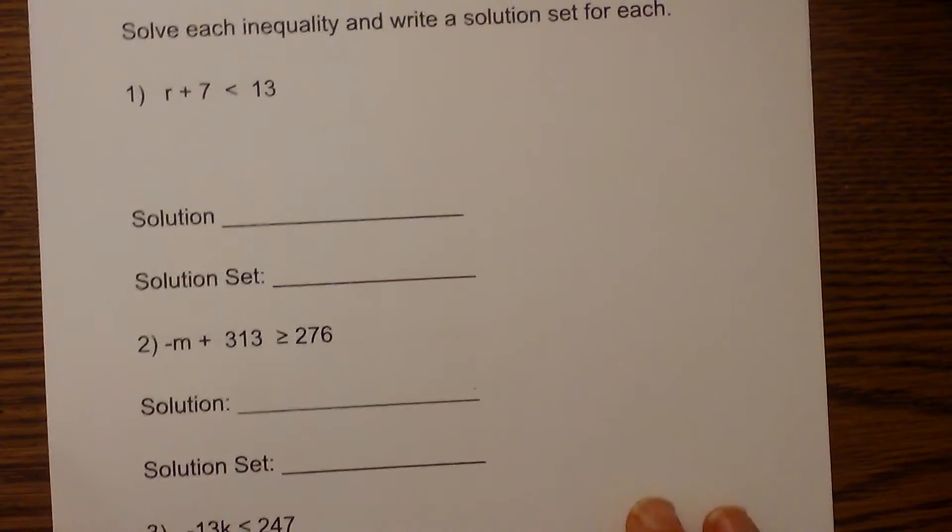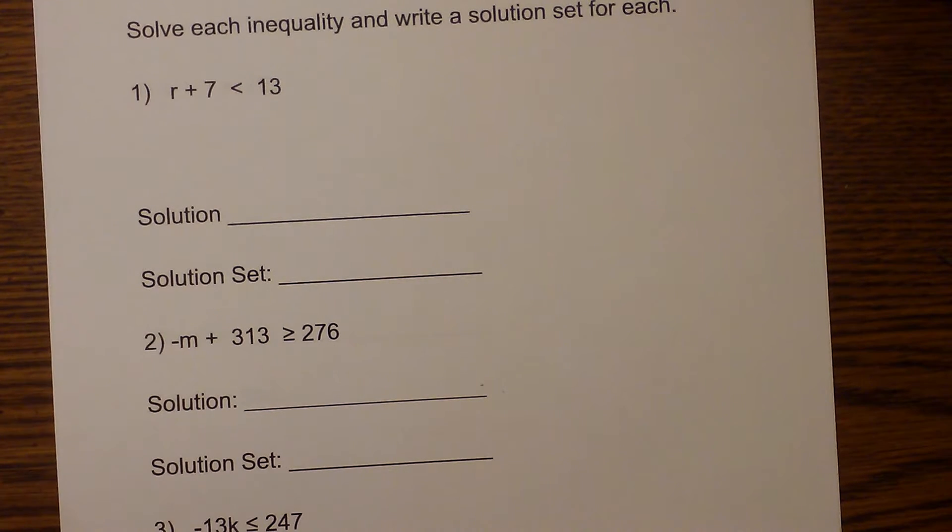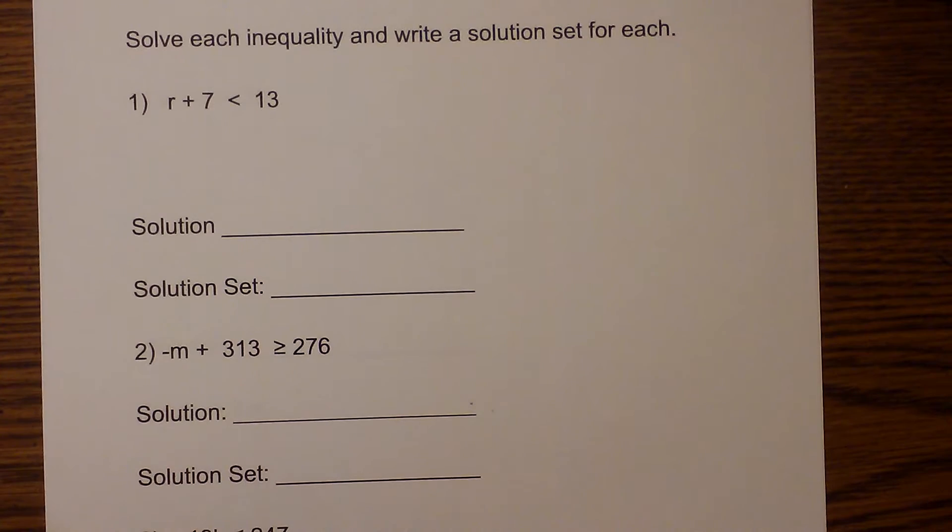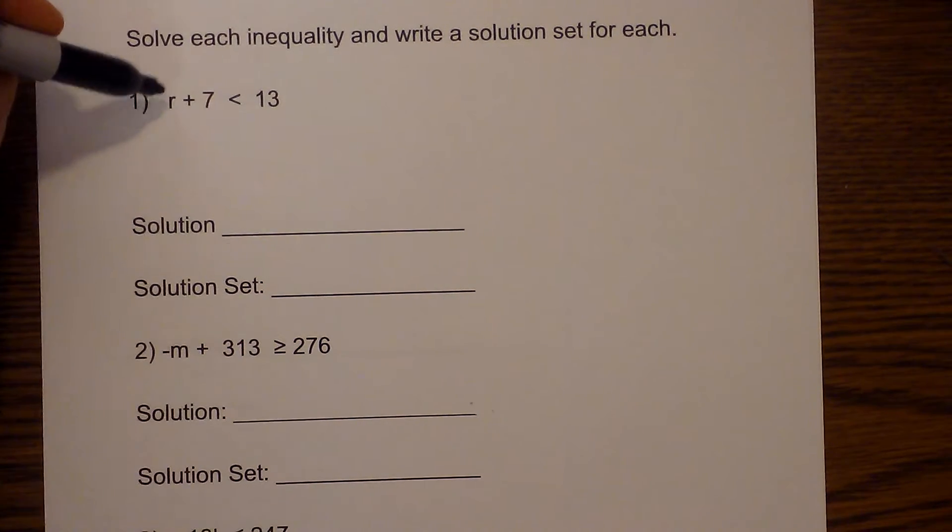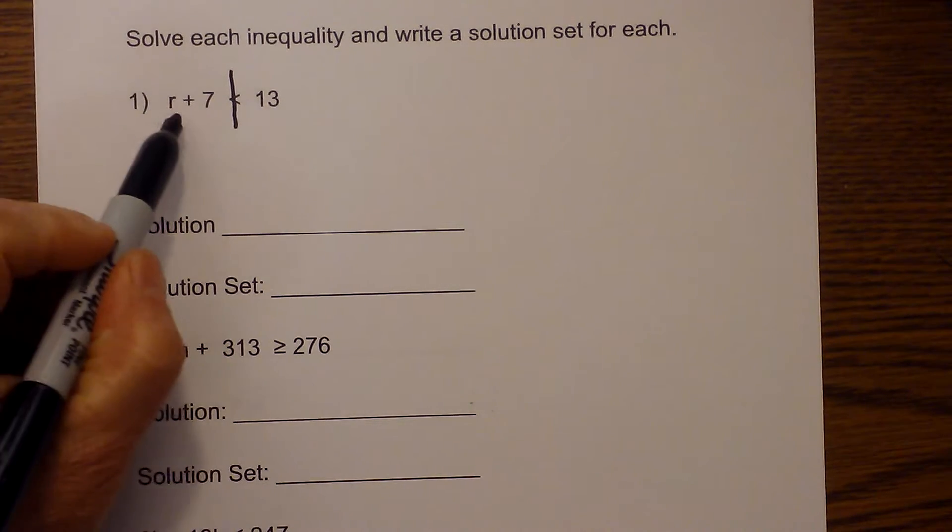We will start with a very simple one. We're going to solve each inequality and write a solution set for each. We have r plus 7, we can draw a line down through the inequality. We have addition.